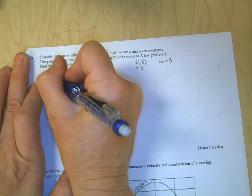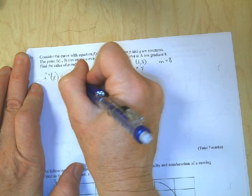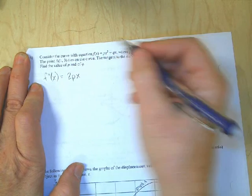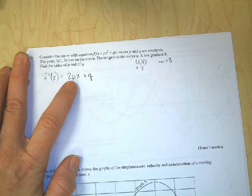I am going to find my first derivative. 2 times P is 2PX, 1 times Q is Q. So the first derivative is 2PX plus Q.